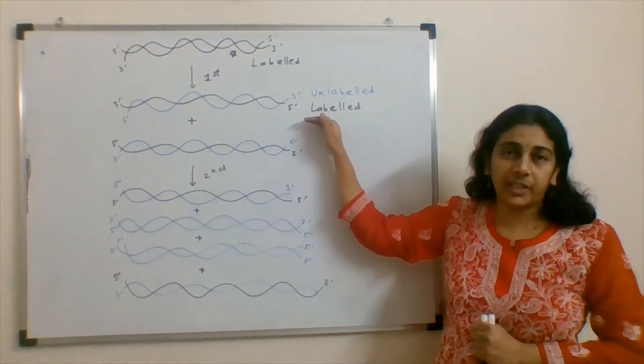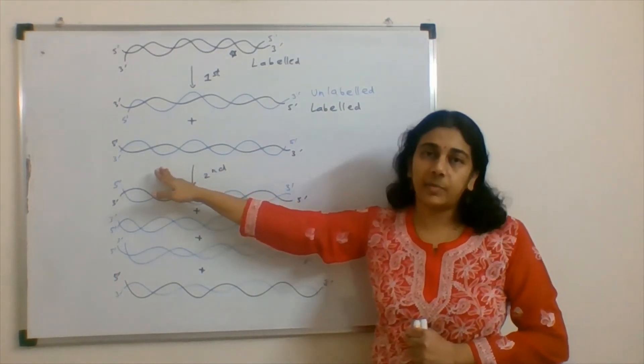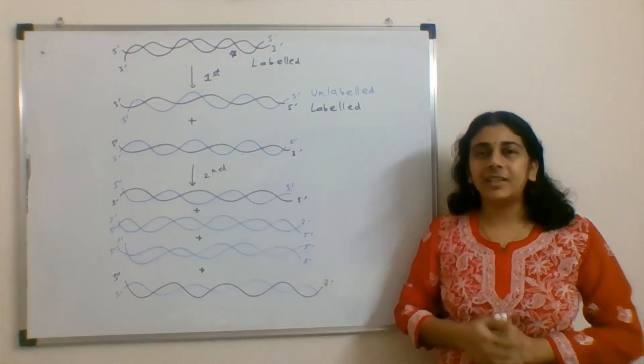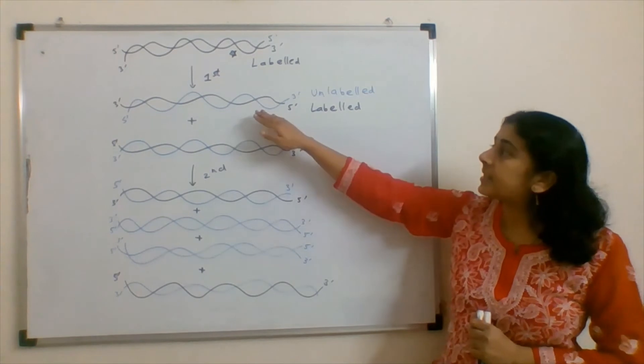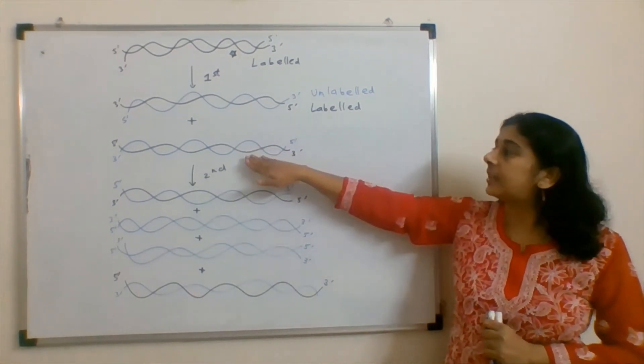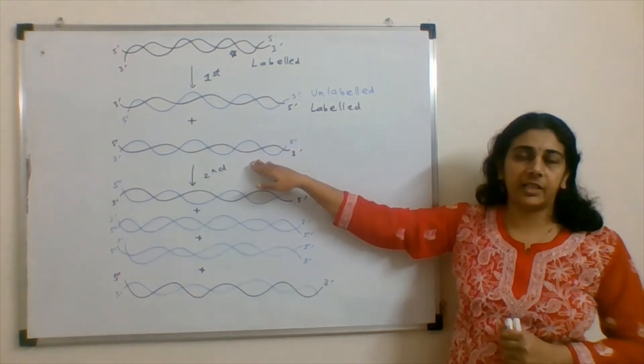After first duplication, what will happen? Newly synthesized strand, this blue one is now unlabelled because the environment is not labelled. One of the strands would be labelled and another would be unlabelled after the first duplication cycle.